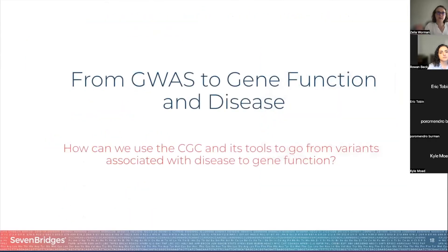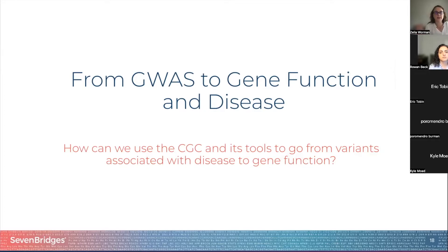Today I'd like to focus on some apps that can be used for genome-wide association studies from input preparation to gene function. Some of the apps I already mentioned could be used to look at a locus associated with a particular disease, identify if there's a particular transcription binding factor binding in that location, and identify a gene of interest. But I really want to focus on: if we were to do a GWAS, how could we use the CGC and available tools to run a pipeline from sequencing data to a Manhattan plot?